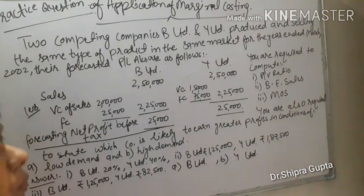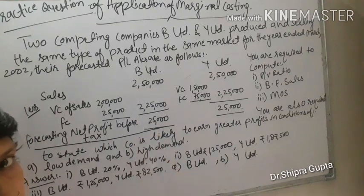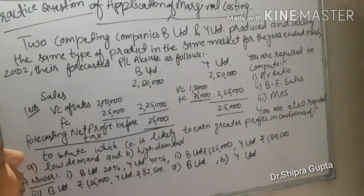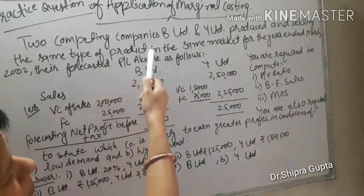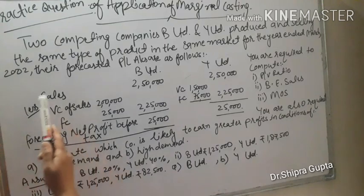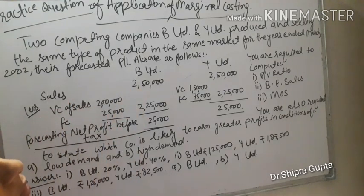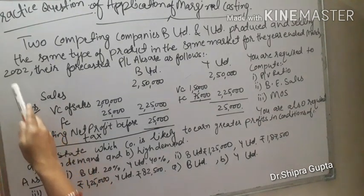In my last video I taught you about the topic of application of marginal costing. This is a practical question for your practice. The question involves two competing companies, B Limited and Y Limited, which produced and sold the same type of product in the same market for the year ended 31st March 2002.